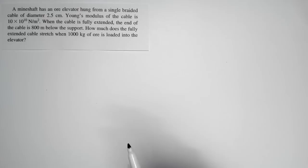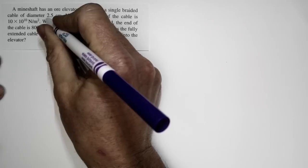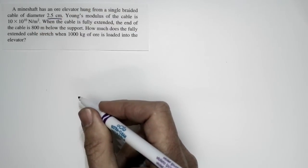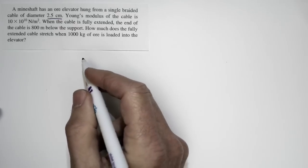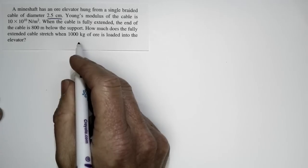Let's take a look at the problem. A mine shaft has an ore elevator hung from a single braided cable of diameter 2.5 centimeters—that's about an inch, a rather stout cable. But as we can see, it's going to be supporting a significant weight, so that makes sense.